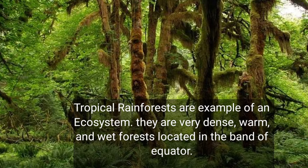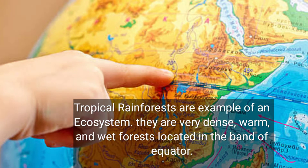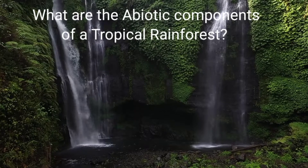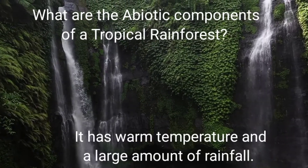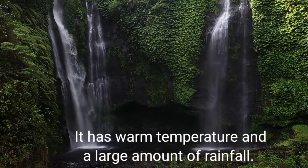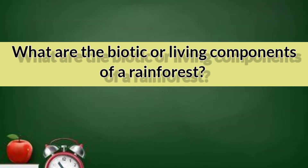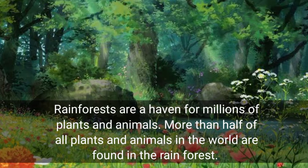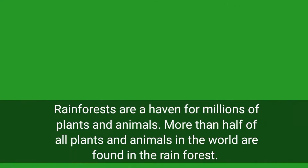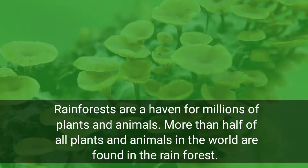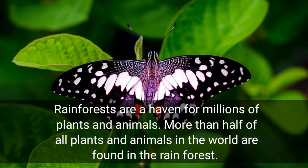Tropical rainforests are examples of an ecosystem. They are very dense, warm, and wet forests located in the band of the equator. Rainforests have a warm temperature and a large amount of rainfall. Rainforests are a haven for millions of plants and animals. More than half of all plants and animals in the world are found in the rainforest.